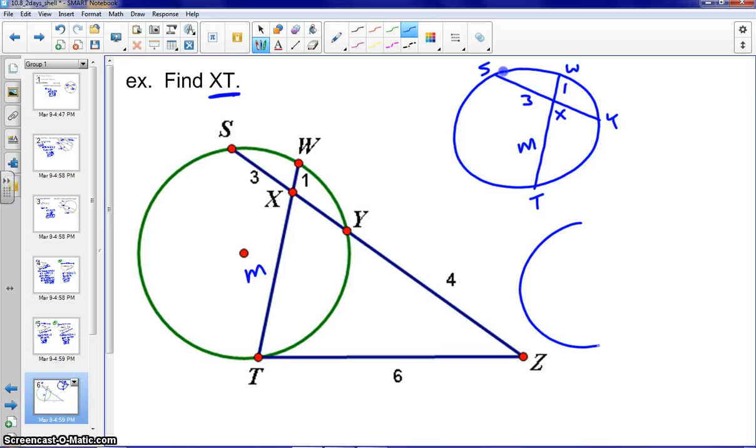So if we redraw our circle again, and sometimes I find it very helpful to redraw when you have a lot of different chord segments going on in a circle, so you can highlight the different power theorems. I did not draw that very well. Let me go ahead and redraw that tangent. So our other power theorem is our tangent secant. Our tangent is T, Z. Our secant is Z, S.